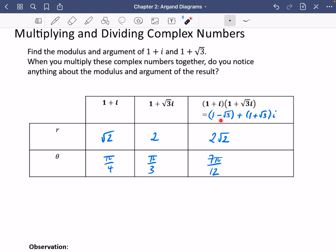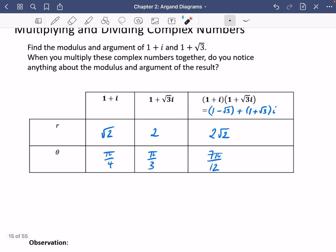When you expand these brackets, you should come up with this. You can see I've collected the real parts and the imaginary parts together. And its modulus is 2√2 and its argument is 7π/12. And I'm wondering if you might be able to spot how this modulus is related to these and how this argument is related to these.